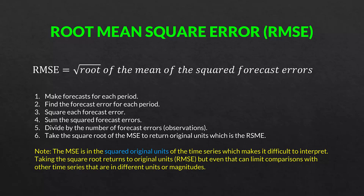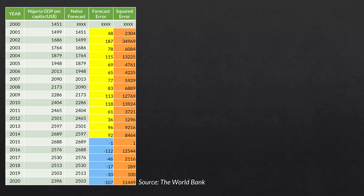In the case of the MAE (mean absolute error from the previous video) and the root mean square error, those are in the original units of the time series — in this case, constant US dollars. Here's our table with the actual values, the forecast values, the forecast errors, and the squared errors. Look at the magnitude of some of the squared errors — they are massive. In 2002, the forecast error was $187; we square that and get a value of almost 35,000, which is very large relative to many other values.